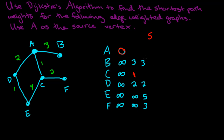We look at the remaining labels and find the minimum, which is D with label 2. D is now in the solution. We look only at its neighbor E — not A, which is already done. E had a label of 5, but now it can get a label of 3, so D updates E to 3. F stays as 3. Now B, E, and F all have the same value of 3, so it doesn't matter which we choose. We take B. B's only neighbor is A, which is already completed, so nothing changes.